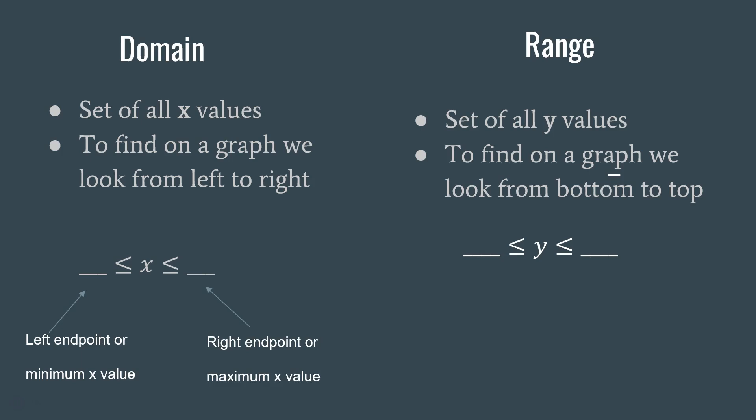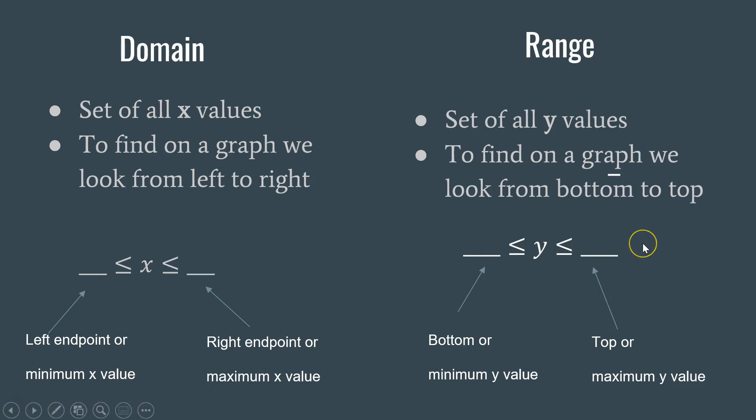To find the range of a graph, we do the same thing but look from bottom to top, because we're looking at the set of all y values. We put the minimum y value — the bottom value — on the left of our inequality, then find the maximum y value on the graph for the right side. These may or may not be endpoints. That's how we represent the domain and range of a graph.